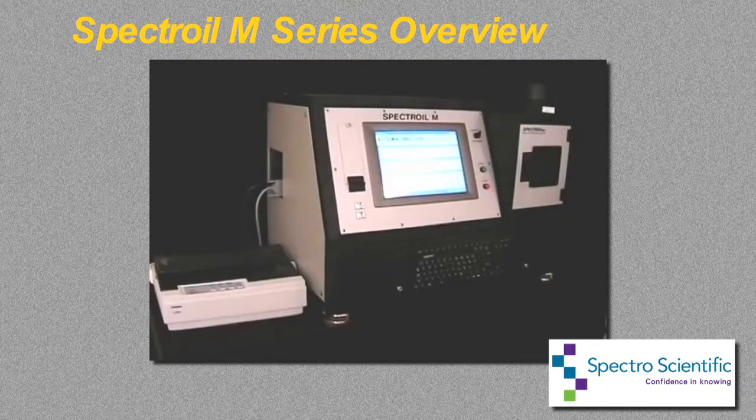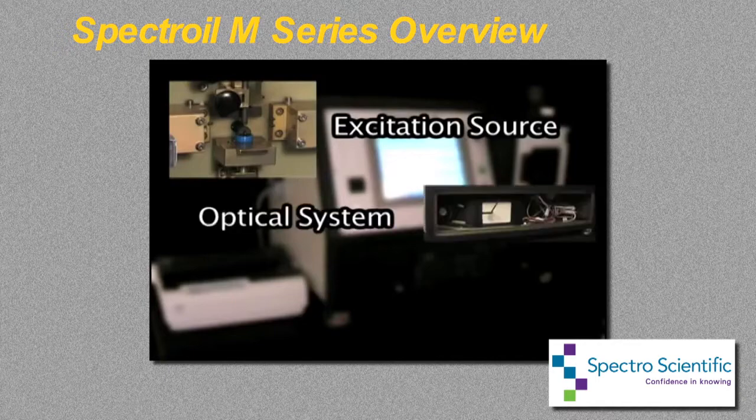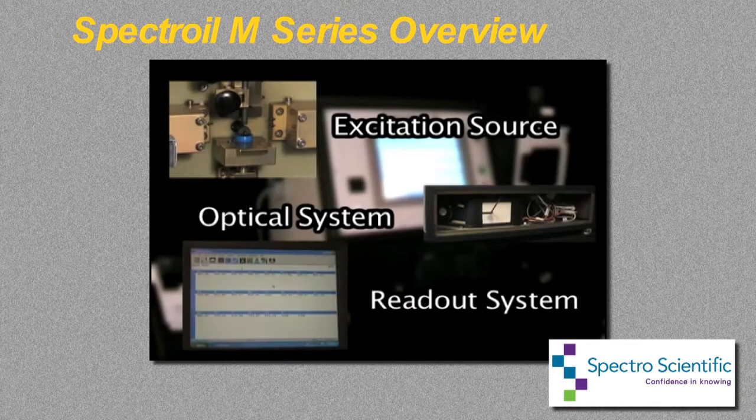The Spectroil consists of three main components: an excitation source, an optical system, and a readout system.